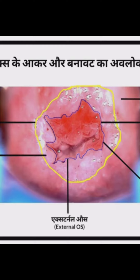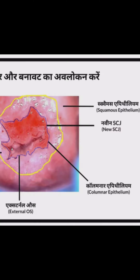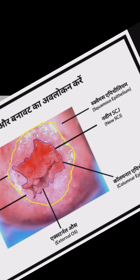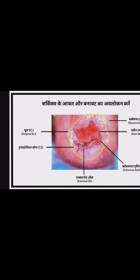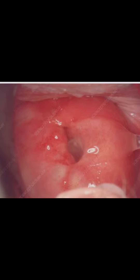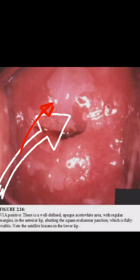After visualization of the ectocervix, identify the transformation zone (TZ), the external os (EO), and the columnar epithelium (CE) — which is red in color — and the squamous epithelium — which is pink in color — and the squamocolumnar junction. After introducing the self-retaining Cusco speculum into the introitus, fix it with the screw and observe the visualization of the cervix.